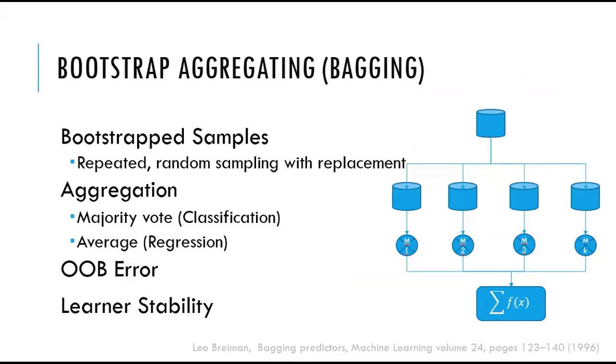Here he explains that bootstrap samples are created from the main training set, such that we have repeated random sampling with replacement, and we create k sets that are as large as the original set, but some of the examples may be repeated in each set.